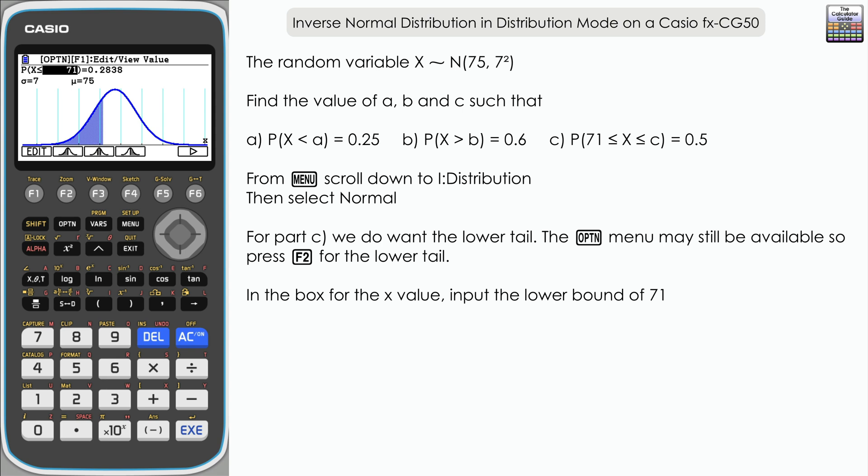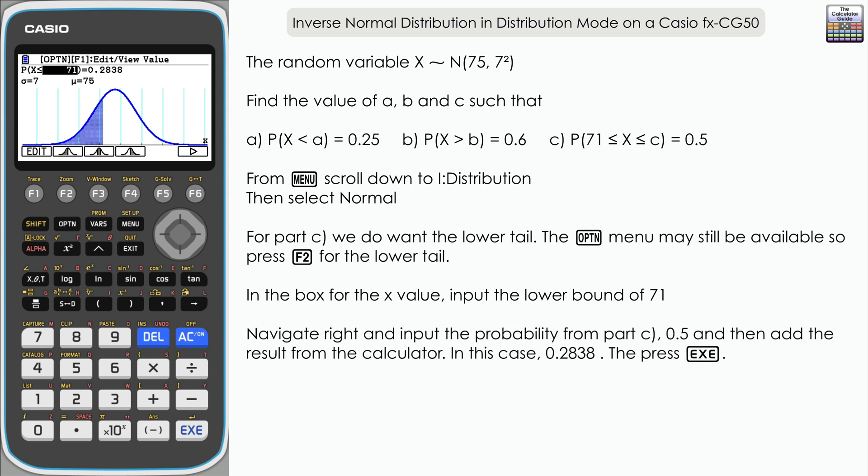But in order to get to the correct value of C, we will need to add this result on to 0.5 to find the correct value of X for C. And we can do that within the app. If you navigate right and let's change the probability, now you need to be careful.